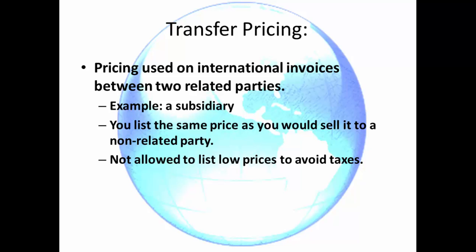Transfer Pricing is pricing used on international invoices between two related parties. An example is a subsidiary — a part of your company that is in another country. You list the same price as you would sell to a non-related party. As it goes from the United States building to your building in the other country, you sell it to yourself at the same price in US dollars. This helps you stay within the US dollar without converting. You are not allowed to list low prices to avoid taxes.